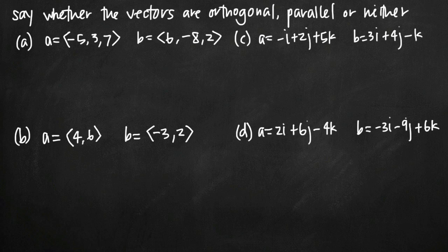Today we're going to be talking about how to determine whether two vectors are orthogonal, parallel, or neither. The first thing we want to keep in mind is that orthogonal essentially means perpendicular. Technically they mean different things because we can't really call two vectors perpendicular necessarily, but a 90 degree angle between the two vectors would be orthogonal vectors, in the same way that a 90 degree angle between two lines would be perpendicular lines — so essentially we're talking about a 90 degree angle making those two vectors orthogonal.